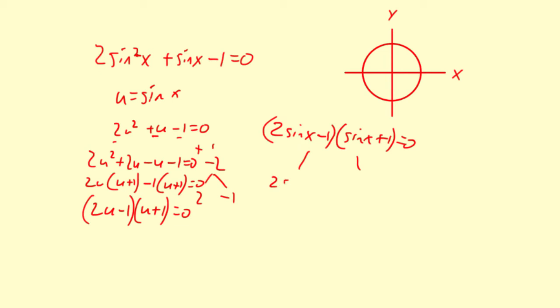So 2 sine x minus 1 equals 0, and sine x plus 1 equals 0. So add 1 to both sides and then divide by 2, you get sine x equals 1 half. And over here, just subtract 1, you get sine x equals negative 1.